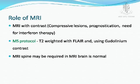MRI of the brain plays an important role: firstly, it can rule out compressive lesions, as retrobulbar neuritis may sometimes be due to a compressive lesion. Secondly, it helps with prognostication — whether the case is likely to evolve into MS — and informs the need for interferon therapy. MRI of the spine is not necessary unless there are symptoms related to the spine.